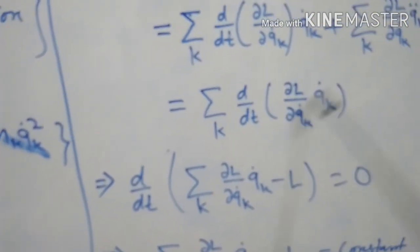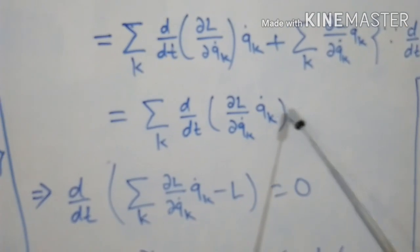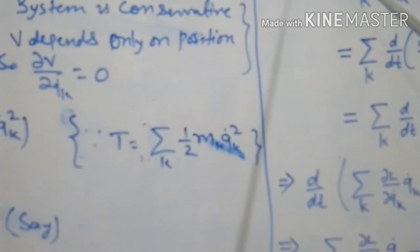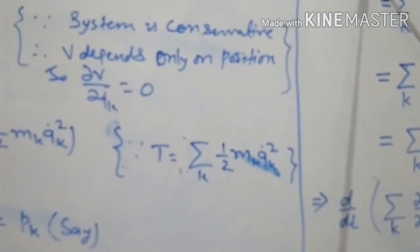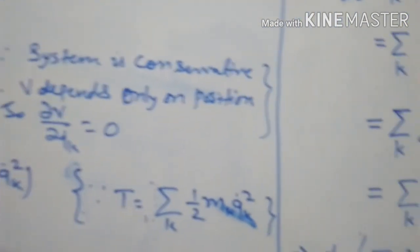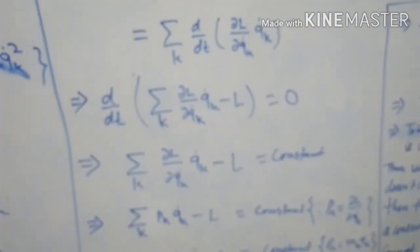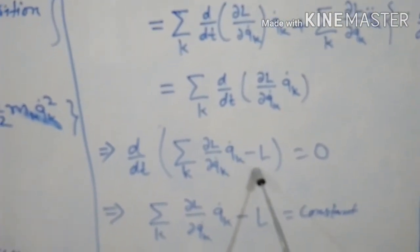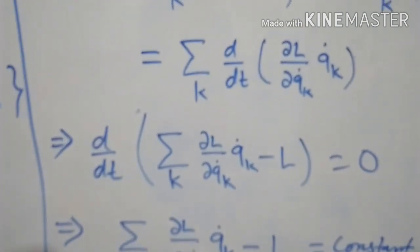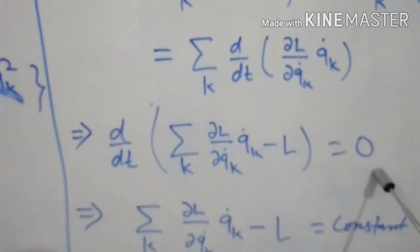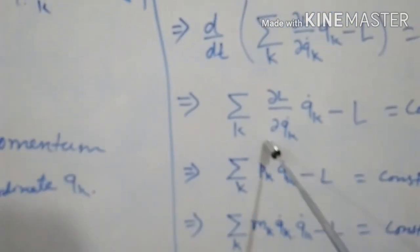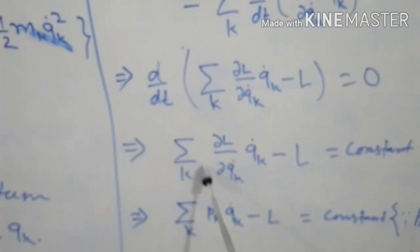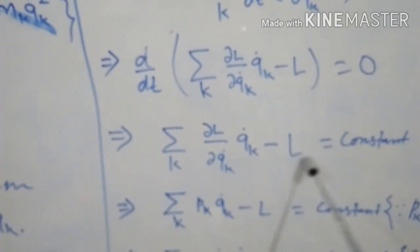These total terms may be written as summation K of D by dt of del L upon del QK dot times QK dot. This equals D by dt of summation K del L upon del QK dot times QK dot minus L. Since this equals d/dt of a quantity set to zero, we integrate to get summation K del L upon del QK dot times QK dot minus L equals constant.